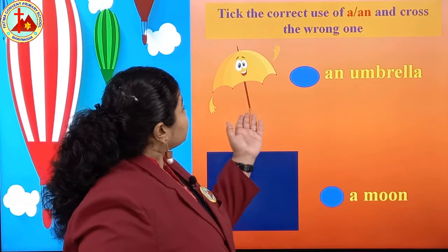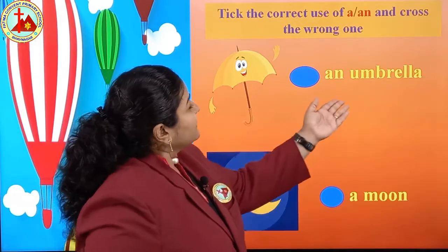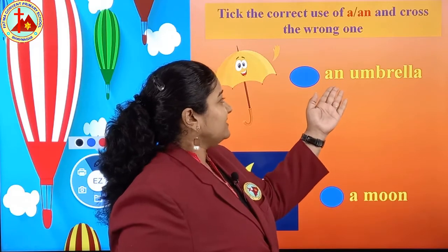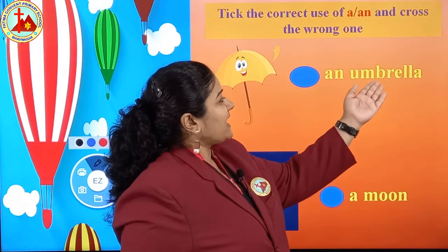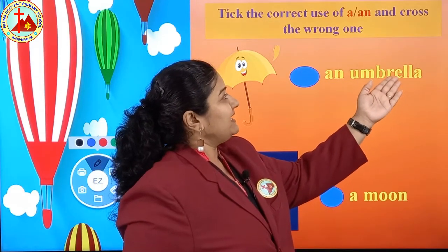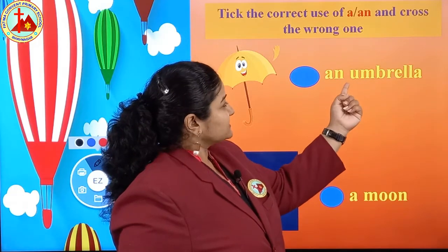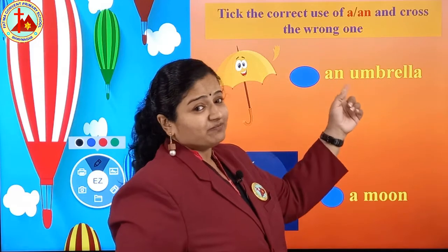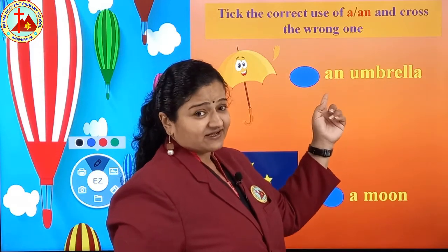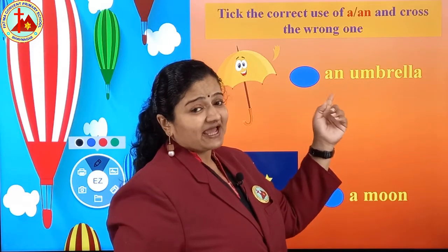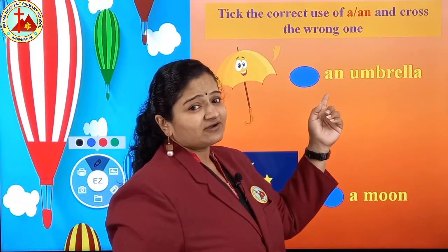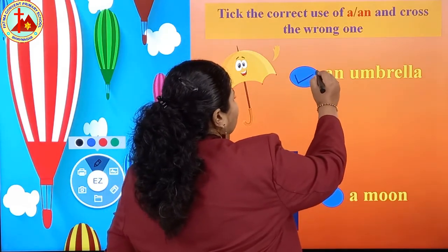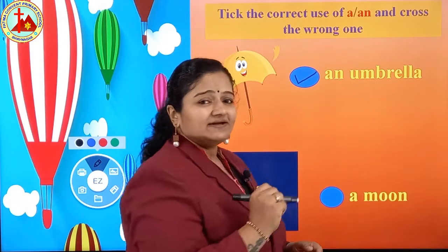Next picture is umbrella. U, M, B, R, E, double L, A — umbrella. First letter is U. U is a vowel, and before vowel AN is written. So this sentence is right — put the tick mark.